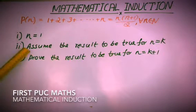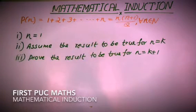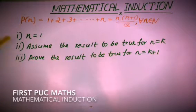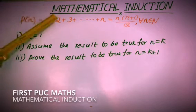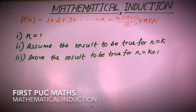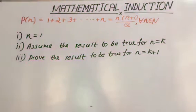As a second step, we have to assume the result to be true for n equal to k. That means replacing every n by k — that is P of k. So k terms will be there in the expansion, and we assume the given result is true. As a third step of mathematical induction, we prove the result for n equal to k plus 1. At the end, we conclude that by the principle of mathematical induction, the given result is true for all n belonging to the natural numbers.